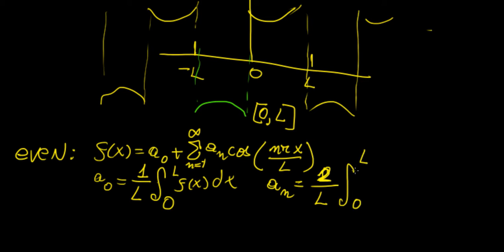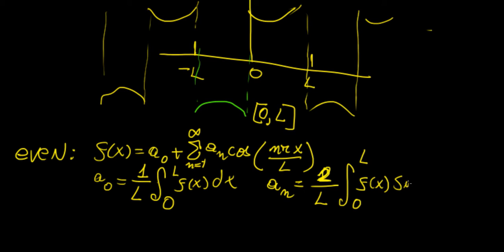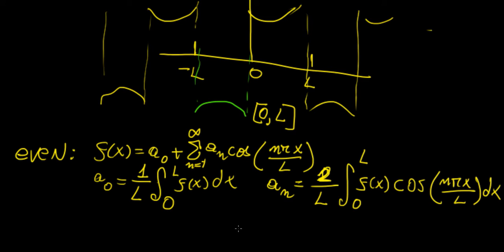And aₙ is going to be 2/L times the integral from 0 to L of f(x) cosine(nπx/L) dx. Those are our two coefficients, and bₙ is just going to be zero because we're taking an even function.